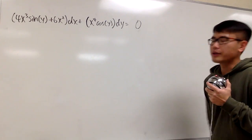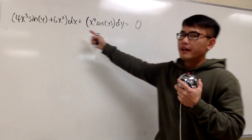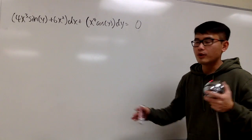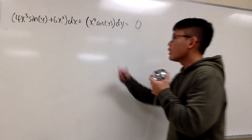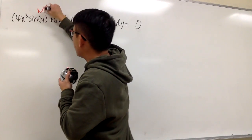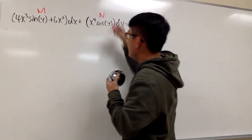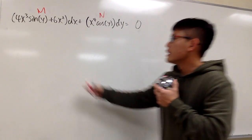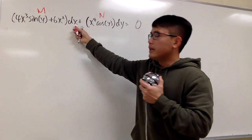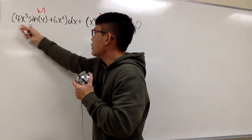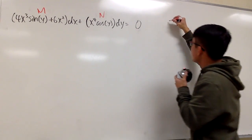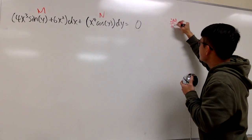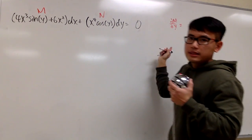Let's take a look at this example right here. It looks like an exact differential equation, right? Of course, we have to be sure — we have to do the check. So right here, let me label this as M and let me label this as N, and we have to do the partial derivative business. This is with dx, so that means I have to take the partial of M with respect to y.